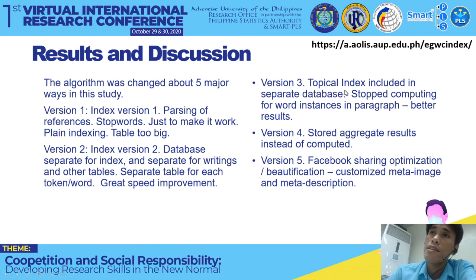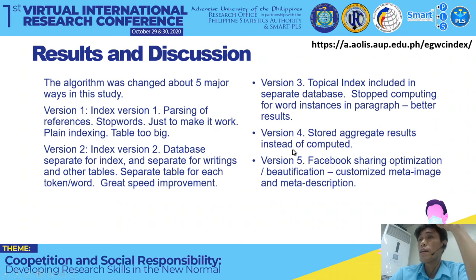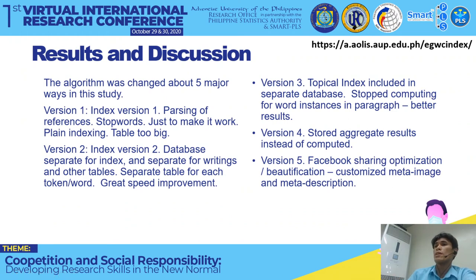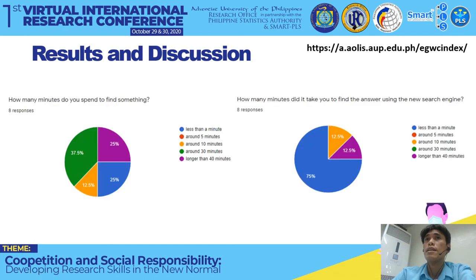Version 3: I separated the topical index as a distinct component and stopped computing word instances per paragraph, which I used to do. I got better results by not doing that — it turned out to be unnecessary. Version 4: I stored aggregated results instead of computing them on the fly. Version 5: I added Facebook optimization and beautification so people can share results with a topic image in the meta preview. The main interface retrieves results from topics, user-recommended paragraphs, and the plain search index.